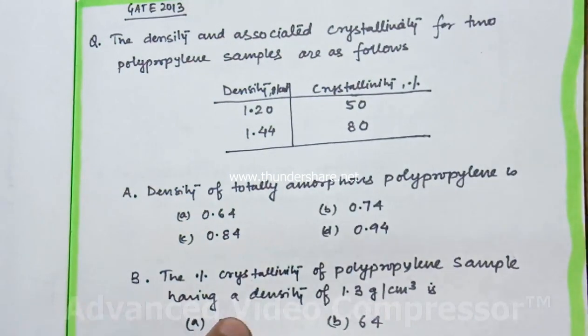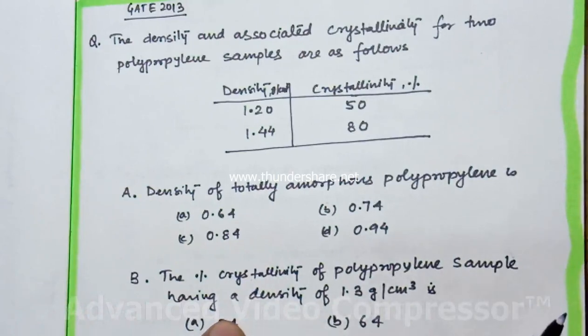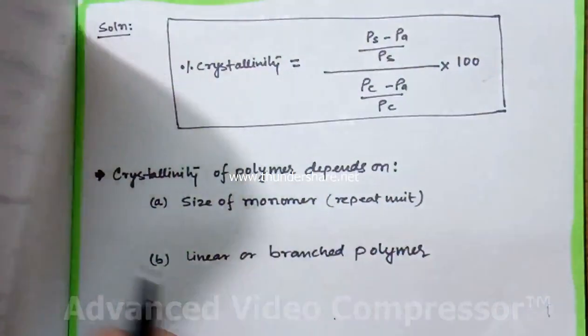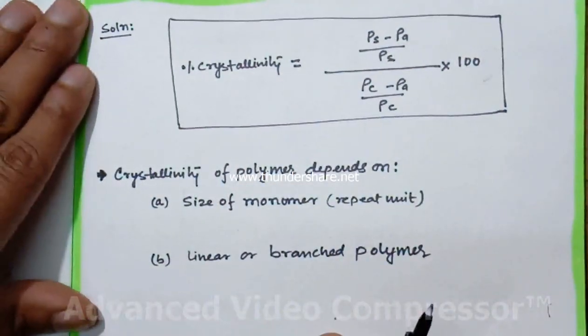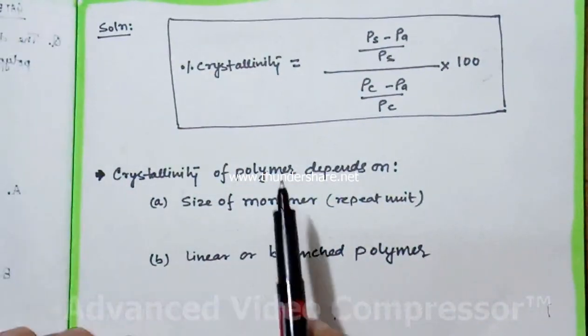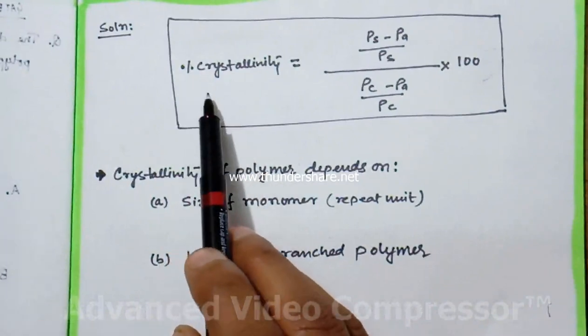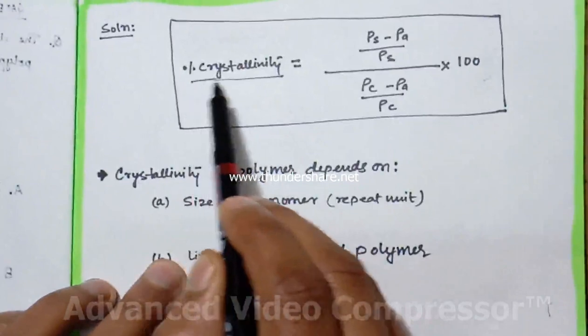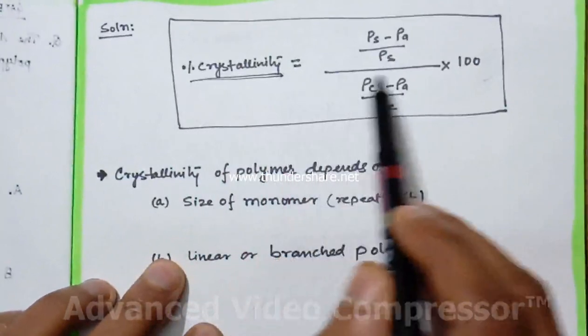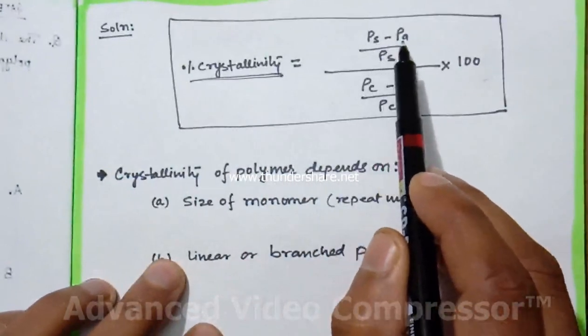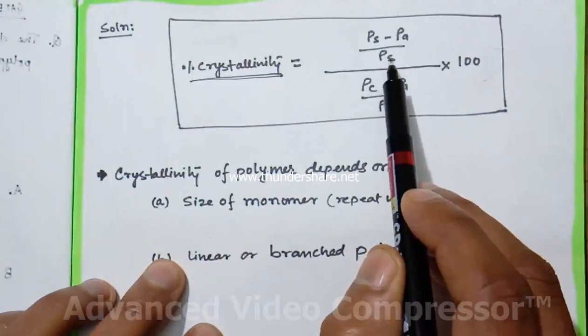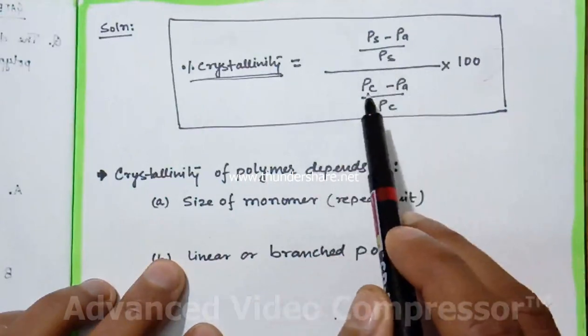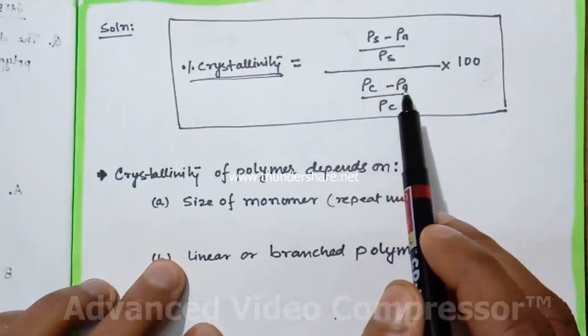First we will discuss what is crystallinity in case of polymer. We will use this formula: percentage crystallinity equals rho s minus rho a divided by rho c, whole divided by rho c minus rho a divided by rho c times 100.